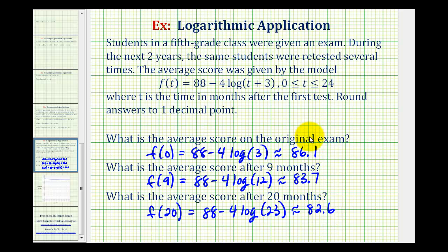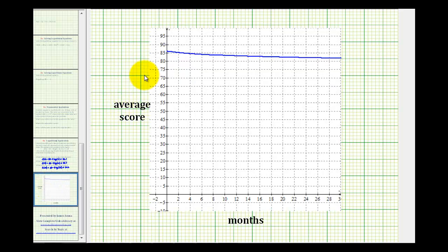So as we can see, as the months pass, the average scores are decreasing. And here's the actual graph of the function, and again we can see over time, the scores are dropping.